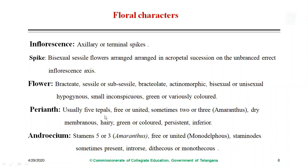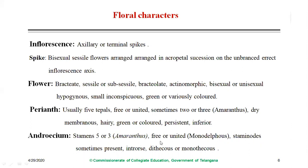In the perianth we usually find five tepals, free or united. In Amaranthus we find three tepals; they are dry, membranous, and hairy — green or colored. In Celosia they are colored and persistent and inferior. Stamens are five or three in Amaranthus, while in Achyranthes aspera we find ten stamens — five fertile and five sterile staminodes. Anthers are arranged in an introrse condition and are dithecous or sometimes monothecous.